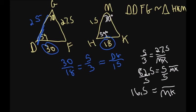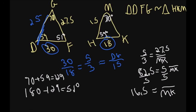So I just need to find that last one. So 70 plus 59 is going to give me 129, and then I do 180 minus 129 to give me 51 degrees. So F is 51 degrees and K is 51 degrees. Now I got all my side lengths and I have all my angle measures.